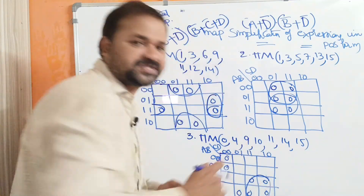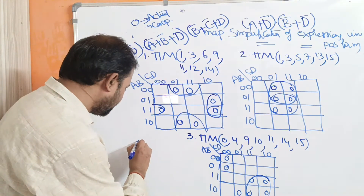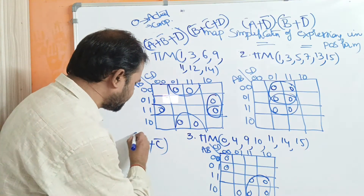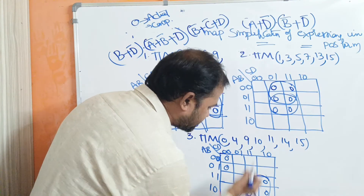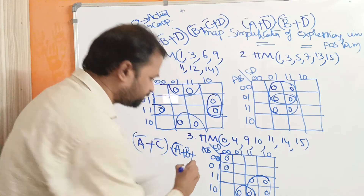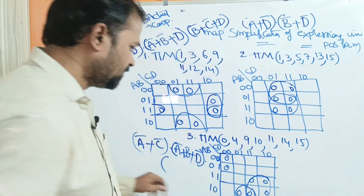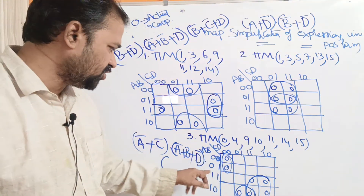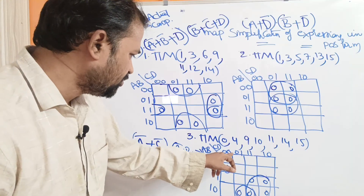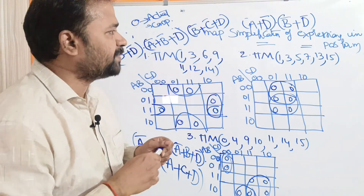For the third problem, we make these four zeros as one group. In cells 1110, the first one is common — value A — so Ā plus. Observing two cells, the first one C gives C̄, giving Ā + C̄. Next, for cells 10, the values are A and B, giving Ā + B. For two more cells, the second one is D giving D̄. For cells 0001, the first two zeros correspond to A and C giving A + C + D. In this way we can solve any POS problem using a four-variable Karnaugh map.